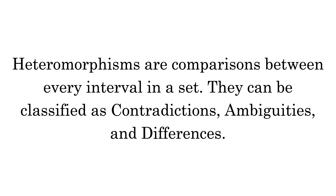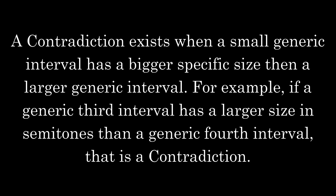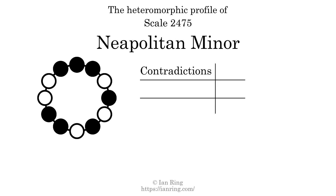Heteromorphisms are comparisons between every interval in a set. They can be classified as contradictions, ambiguities, and differences. A contradiction exists when a small generic interval has a bigger specific size than a larger generic interval — for example, if a generic third interval has a larger size in semitones than a generic fourth interval. The number of contradictions in this scale is 2.